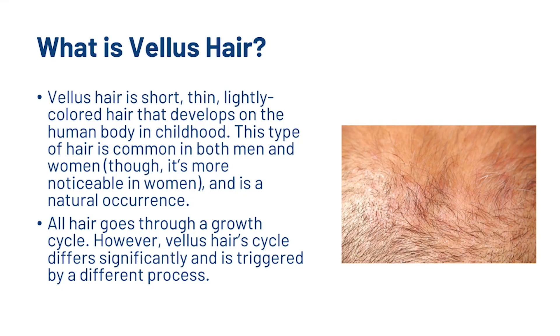So first, what is vellus hair? Vellus hair is short, thin, lightly colored hair that develops on the human body in childhood. This type of hair is common in both men and women, though it's more noticeable in women, and it is a natural occurrence. All hair goes through a growth cycle; however, the vellus hair cycle differs significantly and is triggered by a different process.